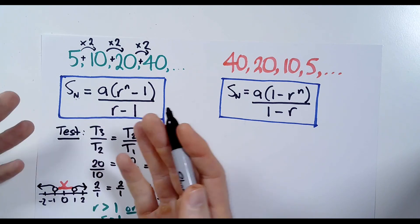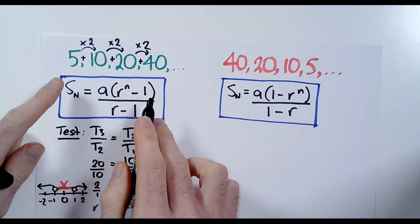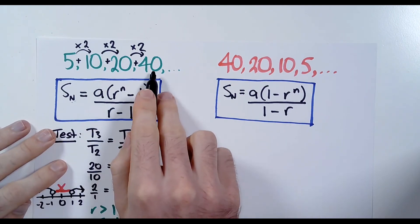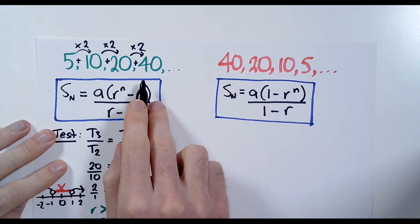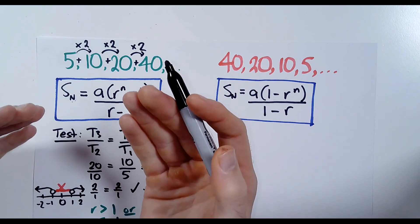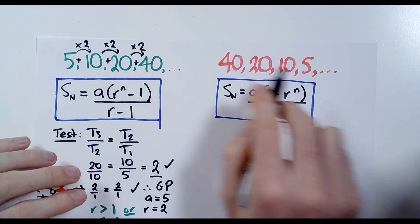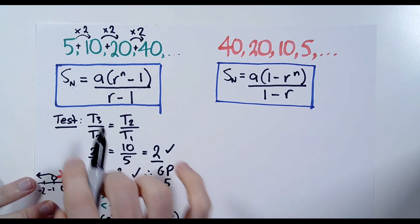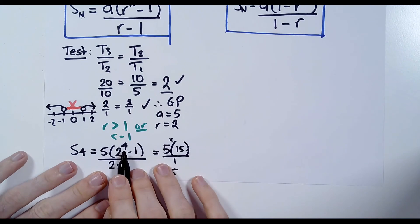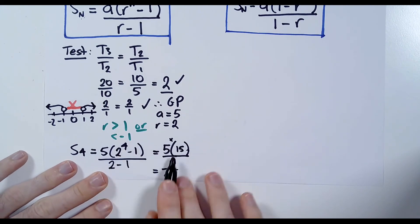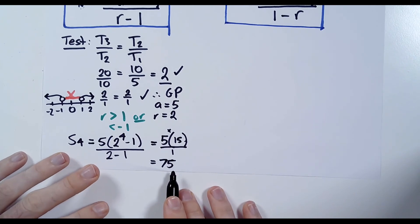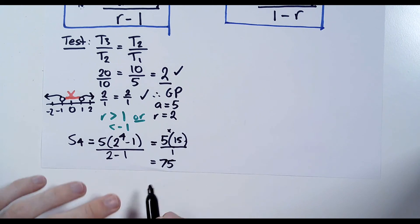You might ask, why bother with this if you can just do it in your head? Well, what if I asked you to find the sum of the first 10 terms? You'd have to write 6 more terms and add them together. Or I could ask for the first 1000 terms — you don't want to write out 1000 numbers. You could just use S1000 and instead of 2 to the 4, put 2 to the 1000 in your calculator and it will tell you the sum.